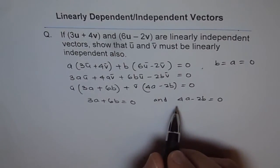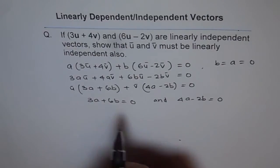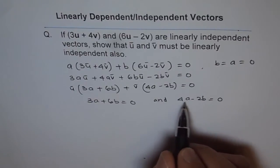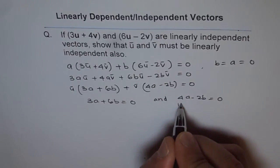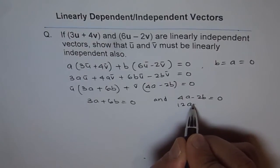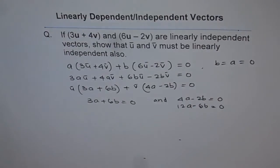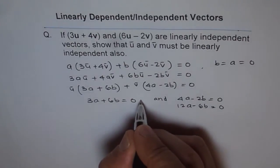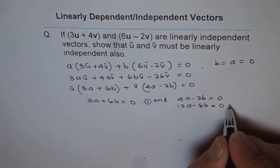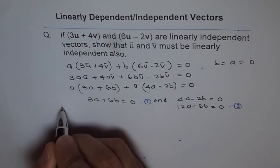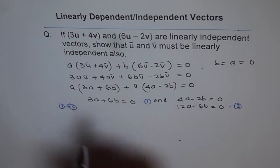We can use elimination or substitution method. If I multiply this equation by 3, I get 12a - 6b = 0. Let's term this equation as equation 1 and this is equation 2. Now if we do equation 1 plus equation 2: